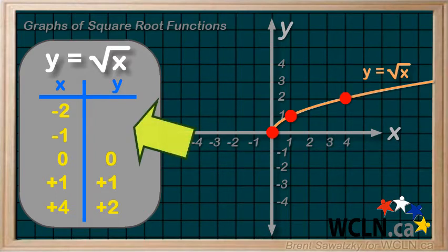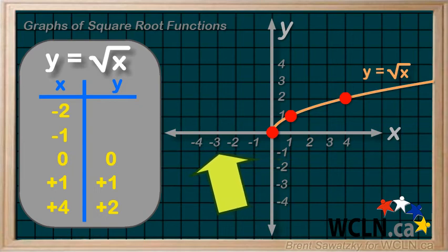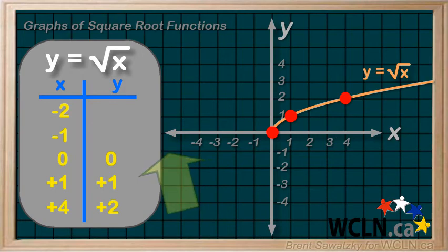Looking at the negatives, we have something strange here. What is the square root of negative one? Well, there's no real number solution to that, same as with negative four and negative nine or any negative number. So there's nothing to graph on the negative side here. Our square root function just kind of appears at a point and then grows to the right like this.